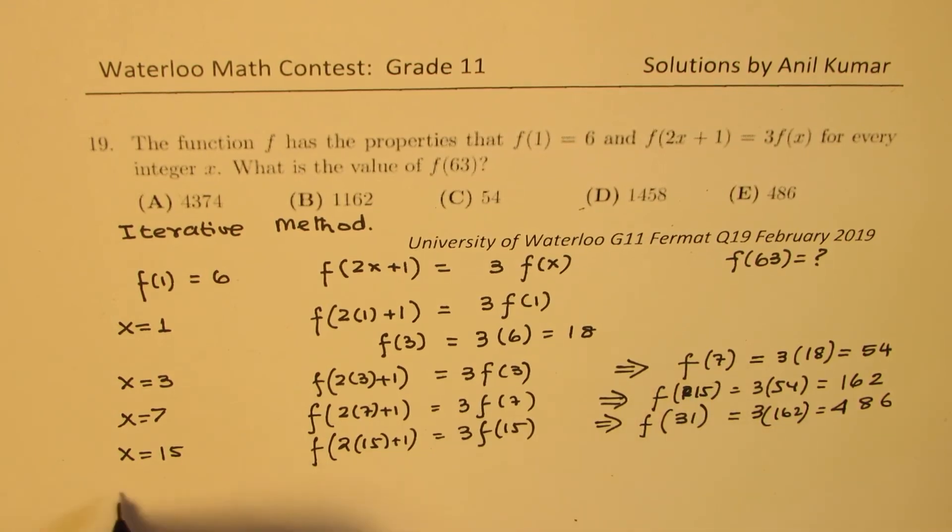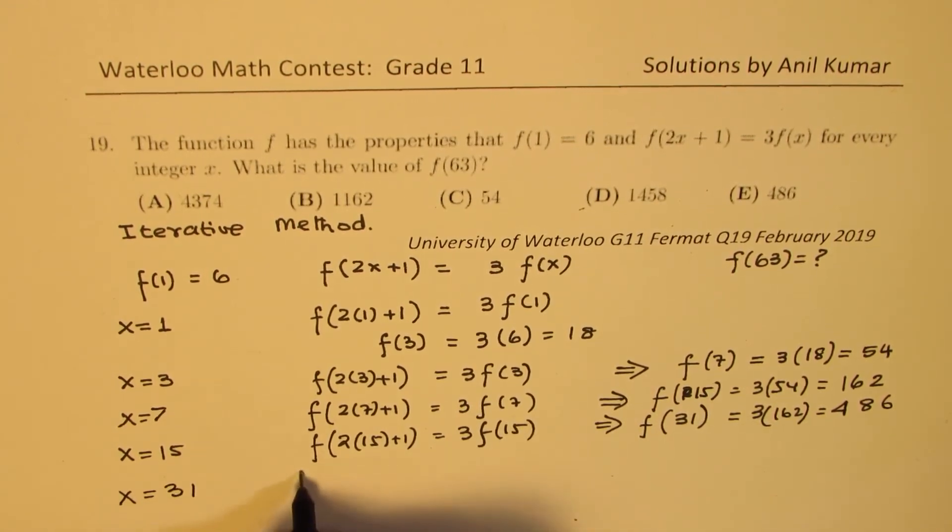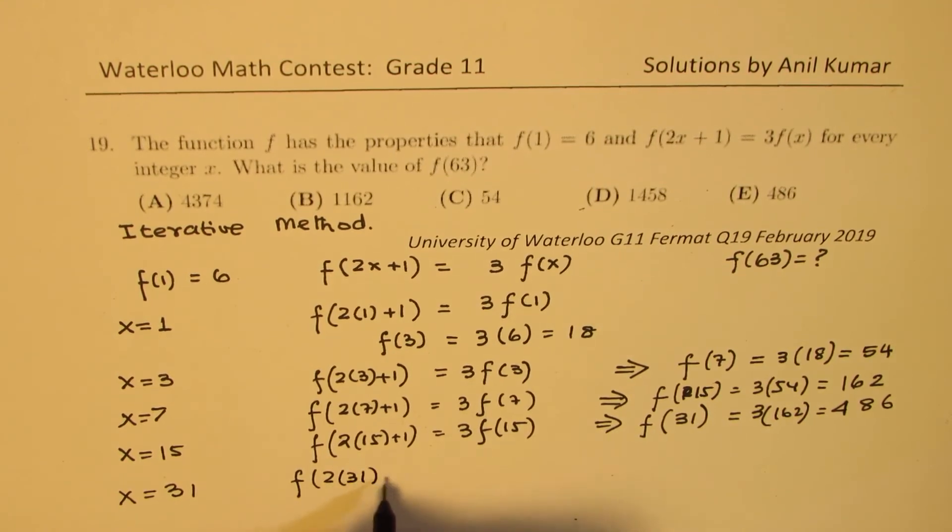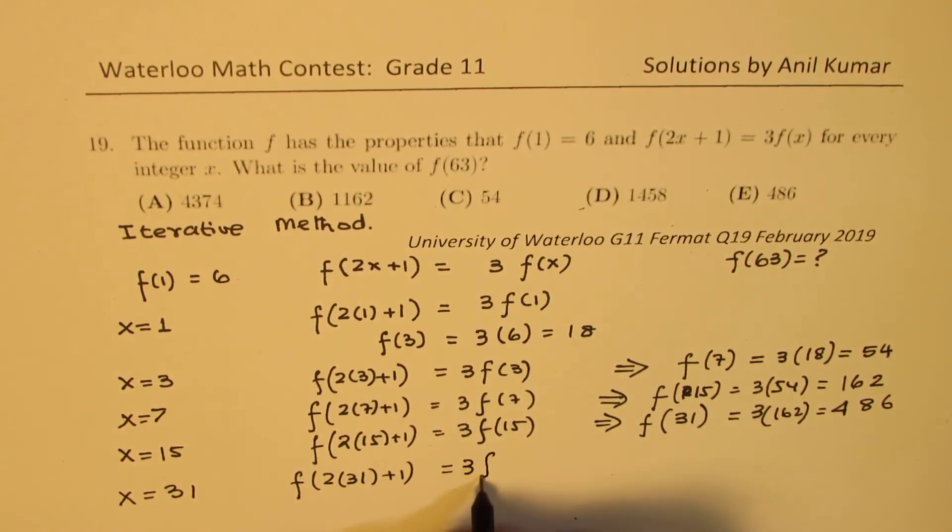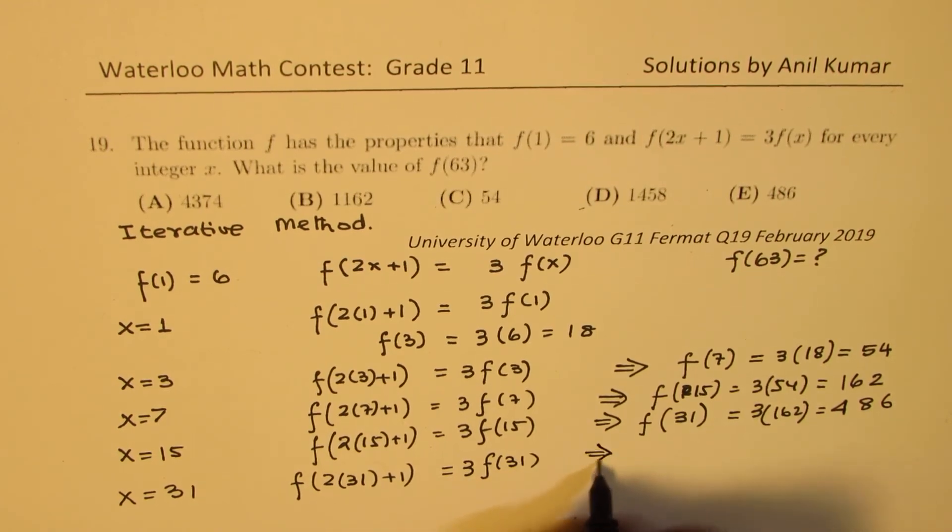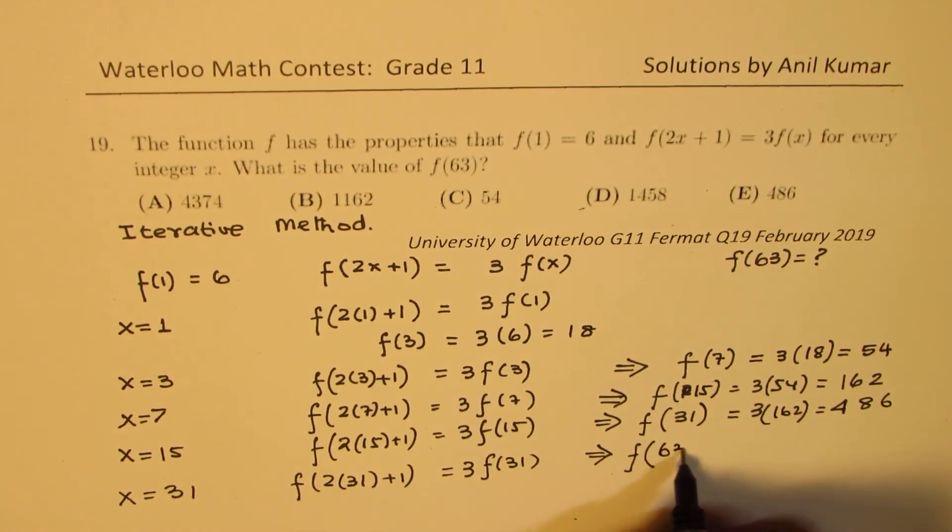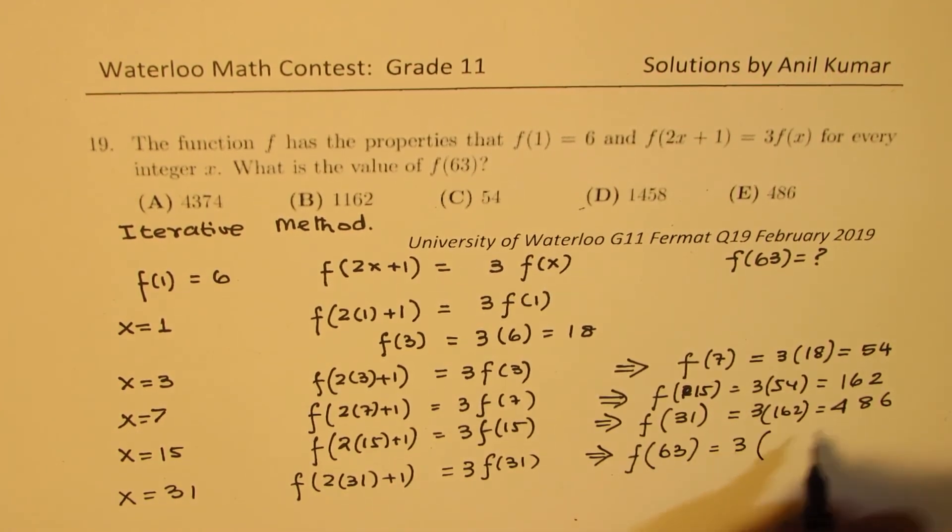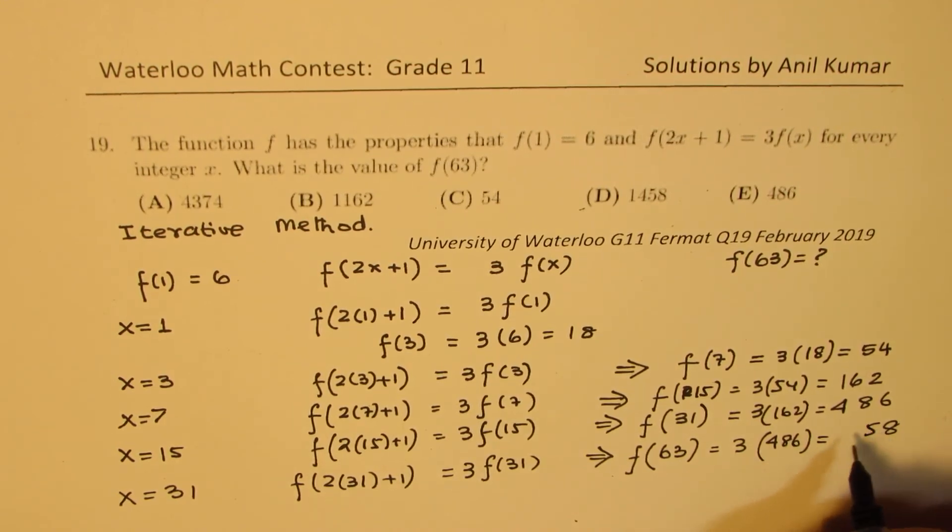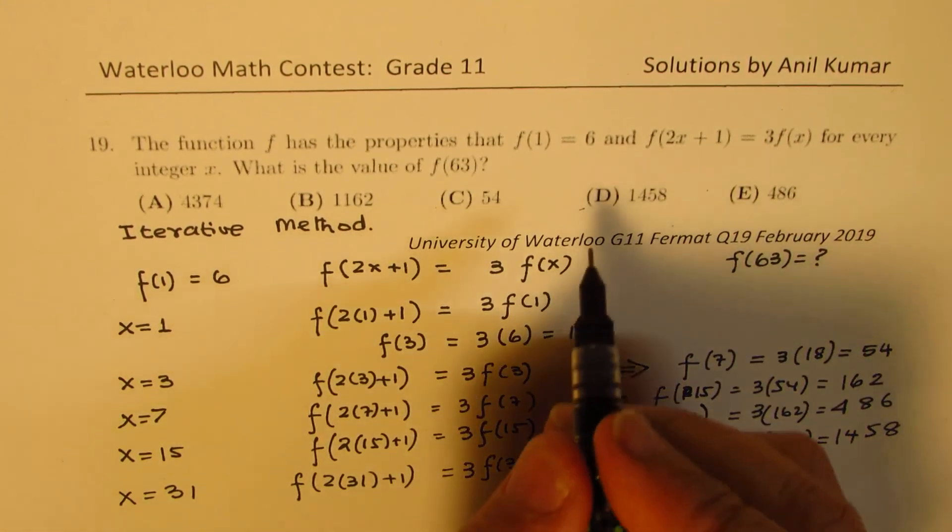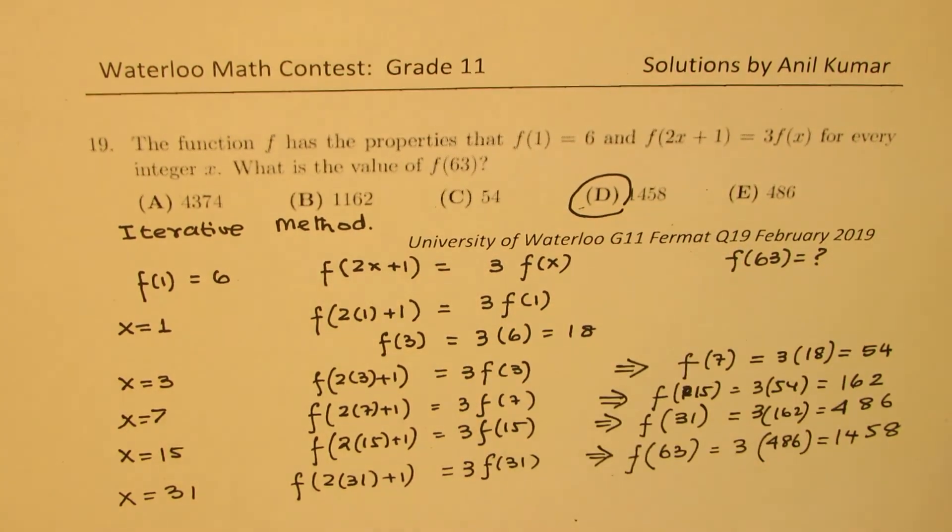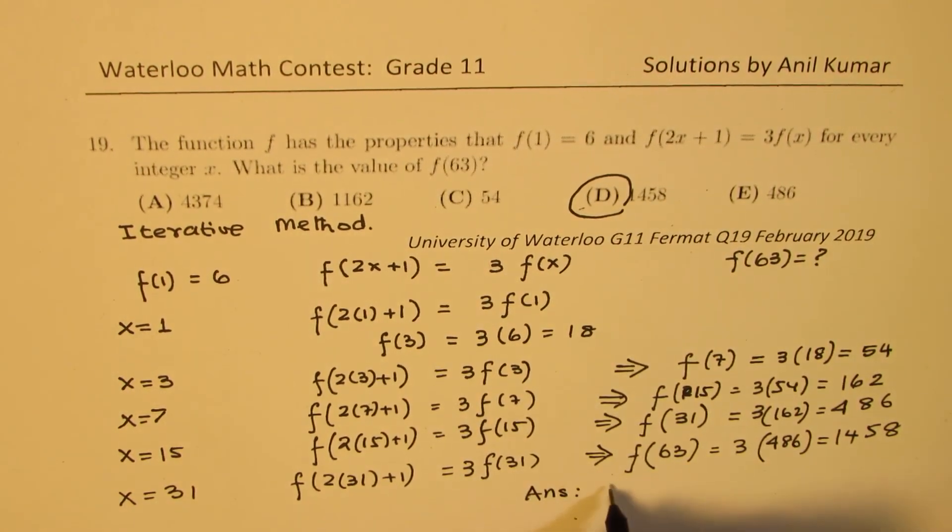Now we know what is f(31). If I substitute x = 31, we get f(2×31+1) = 3f(31). So that gives you f(62+1) = f(63), what we really need. 3×486... that gives you 3×6 is 18 and 1, 24 and 1 is 25, 12 and 2 is 14, so we get 1458, which is our option D.